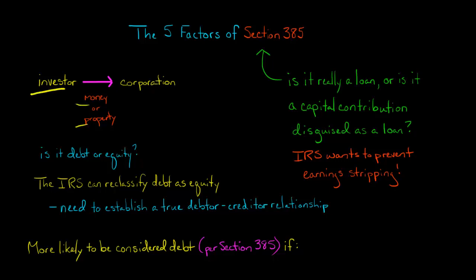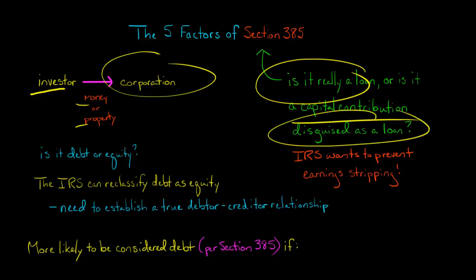When an investor gives money or property to a corporation and says it's a loan, the IRS might raise the question: is this really a loan? Maybe it's a capital contribution disguised as a loan to reduce tax liability. The IRS wants to prevent things like earnings stripping, which I'll make another video on.